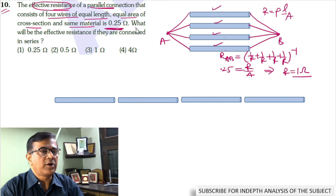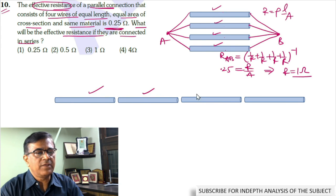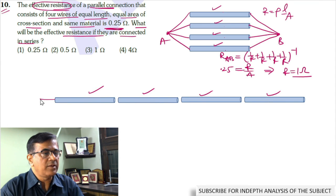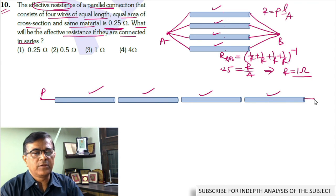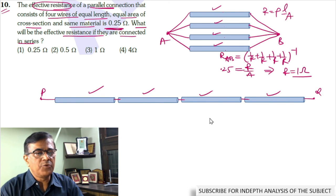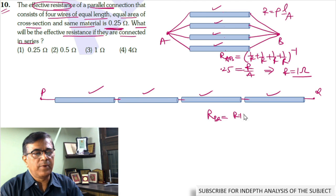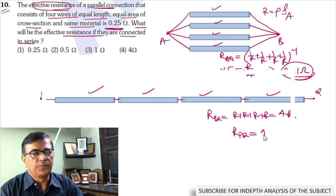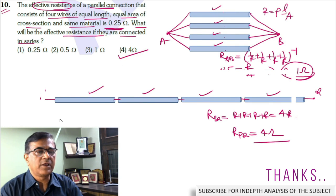Next part: what would be the effective resistance if these are connected in series? These 4 resistances are now connected in series between points P and Q. The equivalent resistance of the series combination is R plus R plus R plus R equals 4R. The value of R is 1, hence RPQ equals 4 ohms. This should be the correct option.